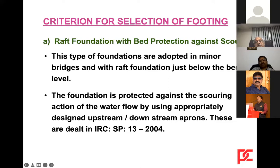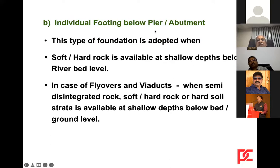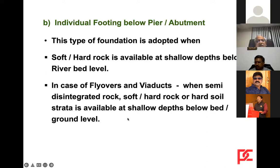Based on this information, the type and depth of foundation below bed level or scour level is selected. Options include shallow foundations — raft foundation with protection against scour, or individual foundations founded below scour level or on rock — or deep foundations like well foundations and pile foundations. Raft foundations with bed protection are adopted in minor bridges with the raft just below bed level, protected against scouring using upstream-downstream aprons as dealt with in IRC SP13.